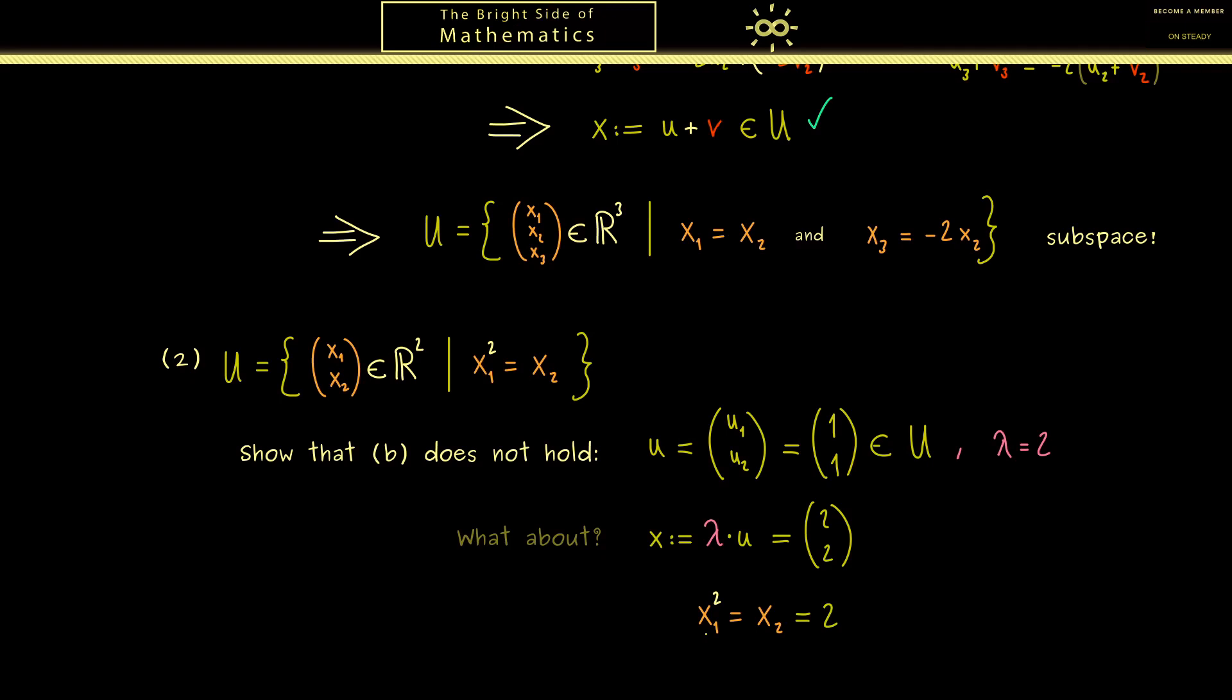So first we see the right hand side is equal to 2, but then we recognize that the left hand side is not equal to 2. Namely this is 2 to the power 2, so 4. And that's important because it means we don't have the equality here. Hence this means that we can leave this set U just by scaling. So we started with the vector in U, then we scaled it, and now we lie outside of U. And this fact tells us we don't have a subspace here. And there you see this is how you show that something is not a subspace: you find a suitable counter example.